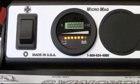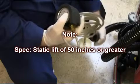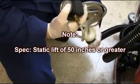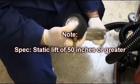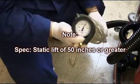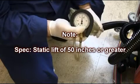Next, turn the vac rocker switch to the on position and test the vacuum system for proper static lift. A static lift gauge will be required to conduct this test. The static lift gauge should read 50 inches or higher to meet manufacturer specifications.